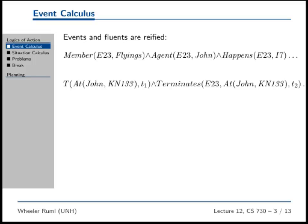Here's an event: event 23. It is a member of the class of flyings. The agent in event 23 — the person who did the event — is John, and event 23 happens during interval 7. This might be a way of saying 'John flew.' There was a flying event done by John, and if we knew that interval 7 was in the past, we'd say 'John flew' rather than 'John will fly' or 'John is flying.'